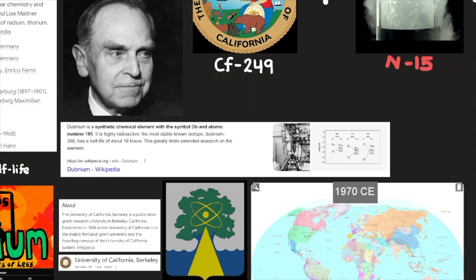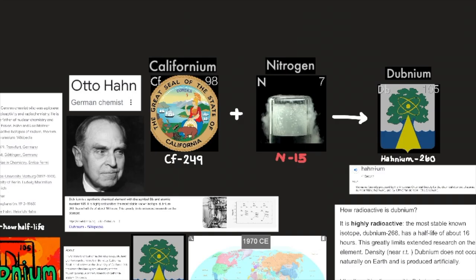Dubnium is a synthetic chemical element with the symbol Db and atomic number 105. It is highly radioactive. The most stable known isotope, Dubnium-268, has a half-life of about 16 hours, which greatly limits extended research on the element, according to Wikipedia.